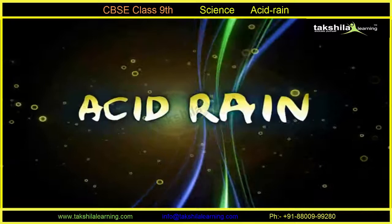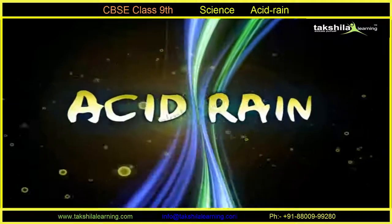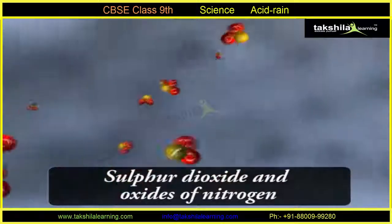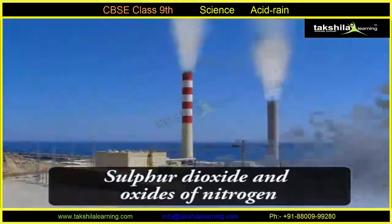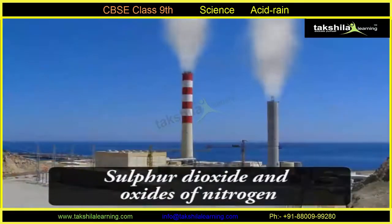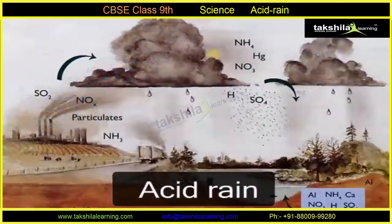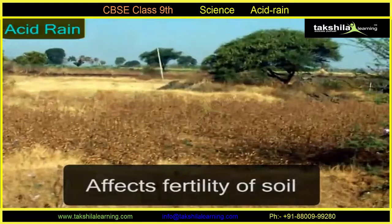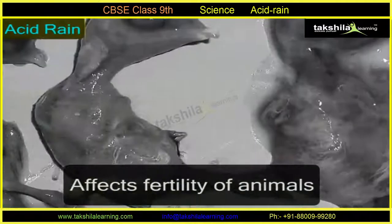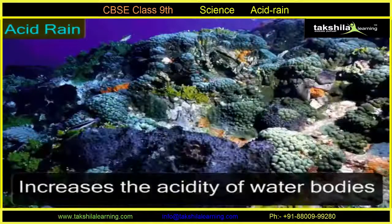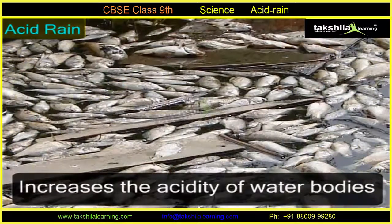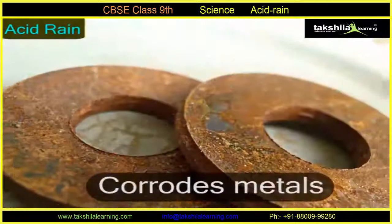Acid rain: the sulfur dioxide and the oxides of nitrogen released from industries and from burning of fossil fuels, when dissolved in rain, result in acid rain. This acid rain increases the acidity of the soil, thereby affecting the fertility of soil, plants, and animals. It also increases the acidity of water bodies, thereby affecting aquatic life. It also corrodes metals.